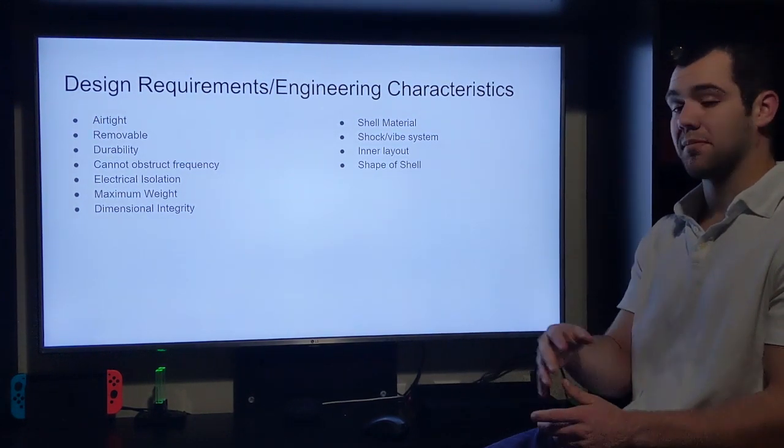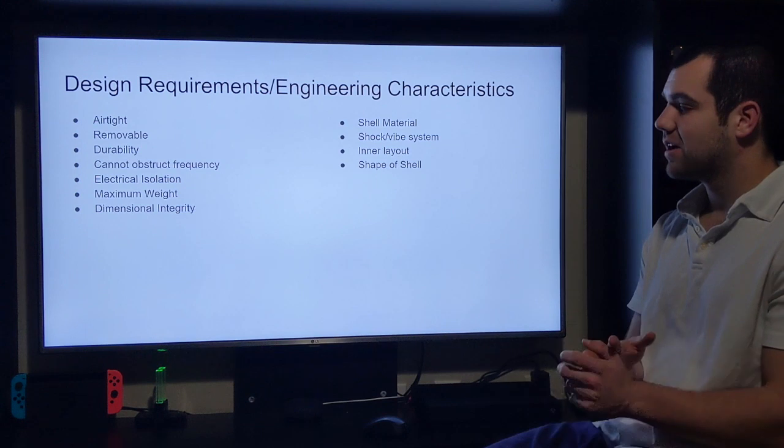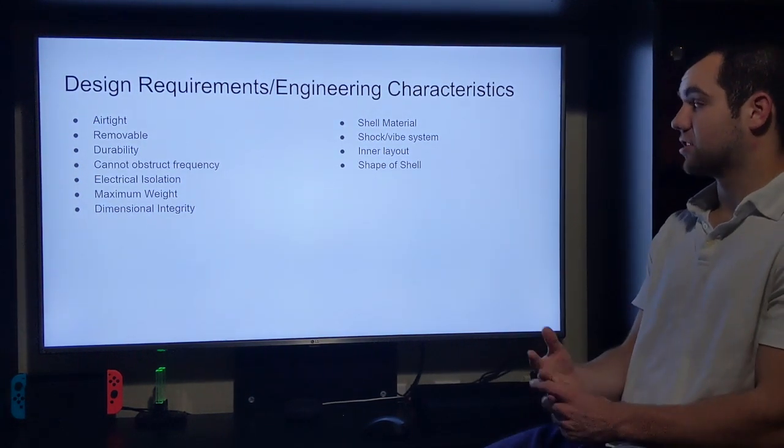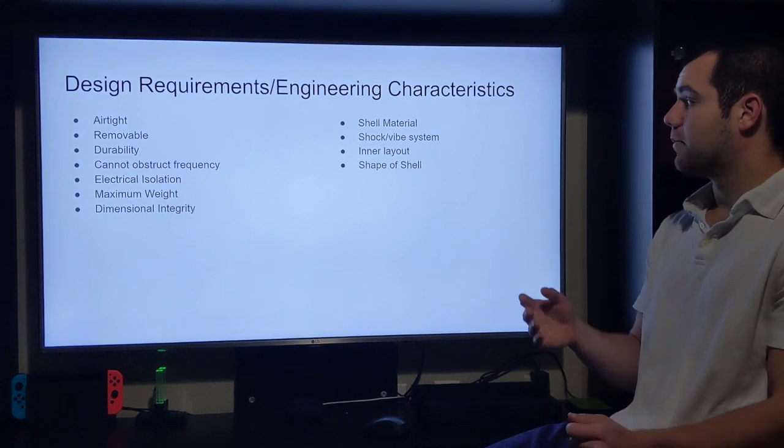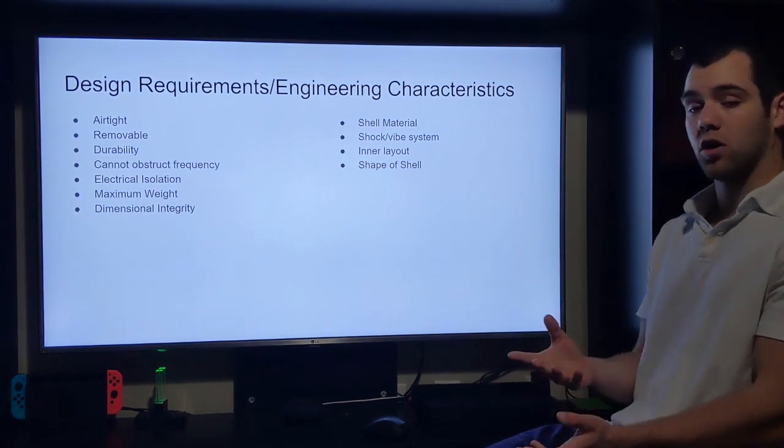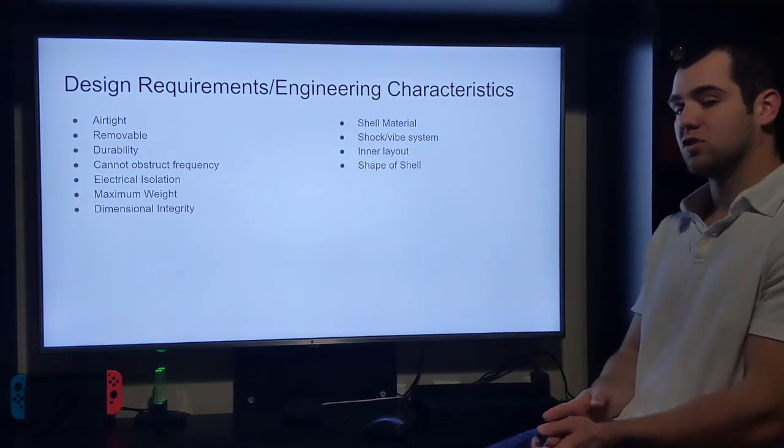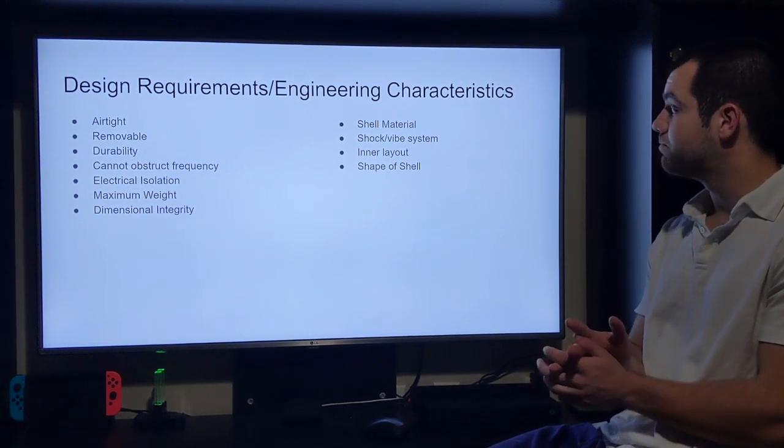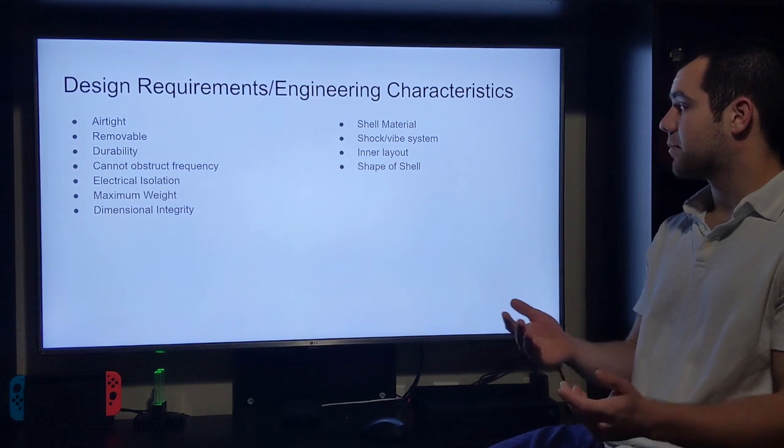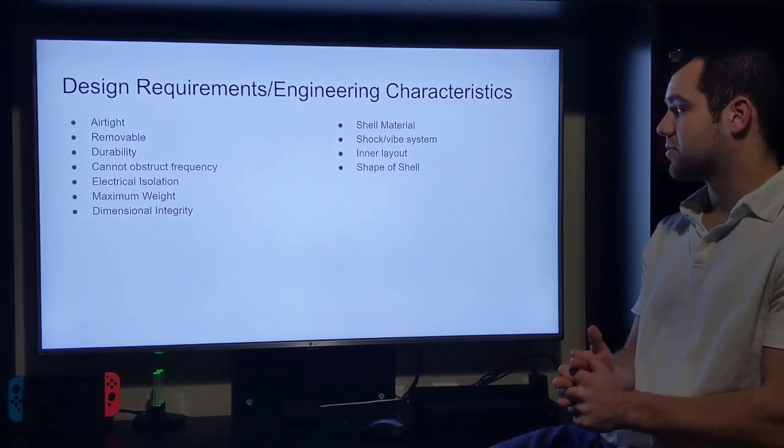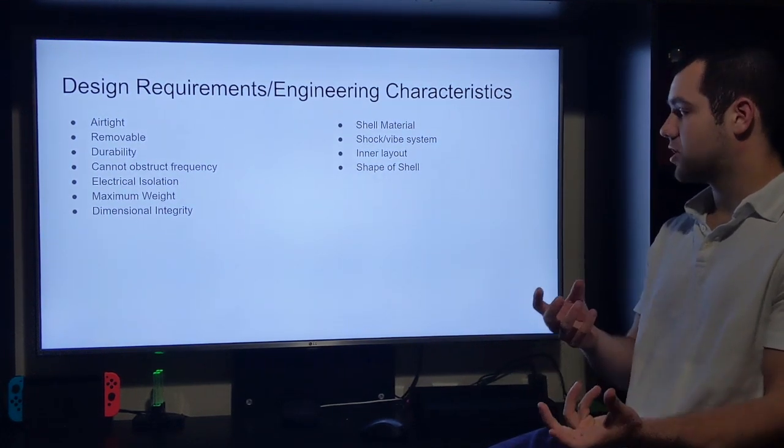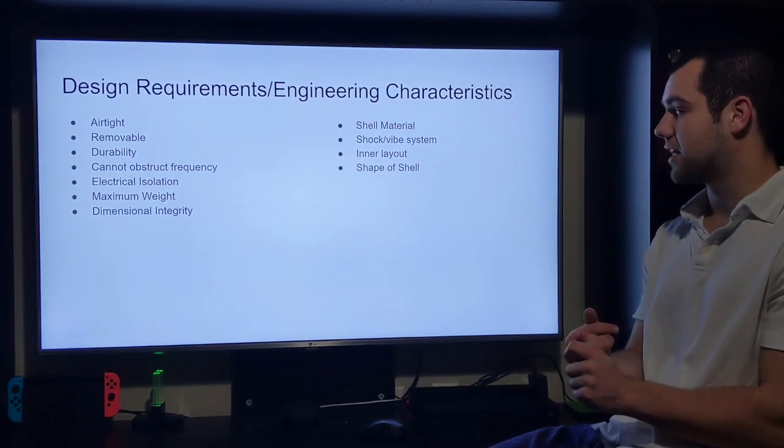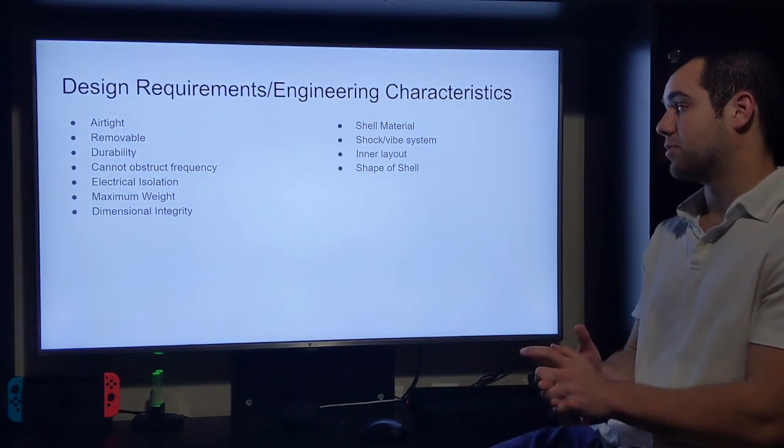We've got to design towards that maximum weight I gave you earlier. Dimensional integrity, obviously holding his tolerances, Dr. Caruso's tolerances. Shell material, we're looking at carbon fiber. We're pretty sure that's what he wants and it's something we can work with in our budget. And then the shock vibration system weight, that's something else we're looking at. And then the layout tolerances, the inside of the cylinder is going to get really tight. And then the overall shape of the shell, just making sure this thing can be carried by the drone.